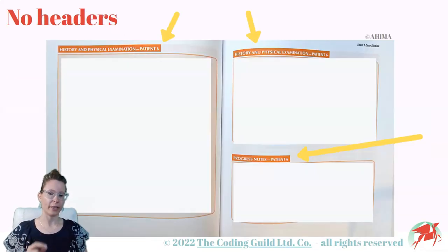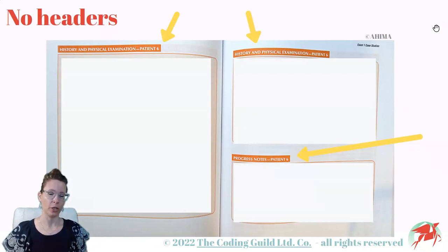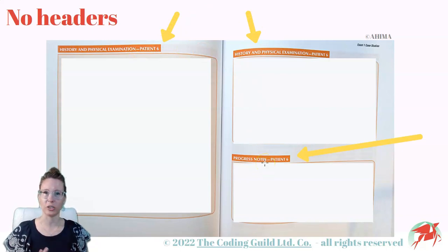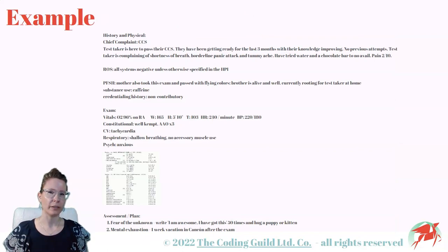Another difference from the study guide is that the case scenarios will not have headers to help you know what section of the patient chart you are looking at. The study guide gives us clues like history and physical, progress note, lab report, operative note, EKG report, and so on. But on the exam the cases are just one long text that you have to review.